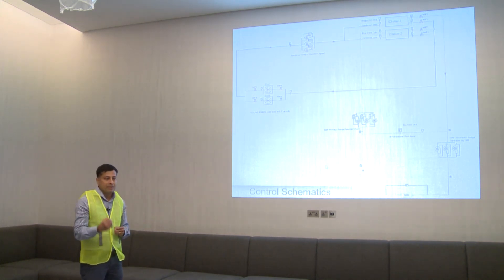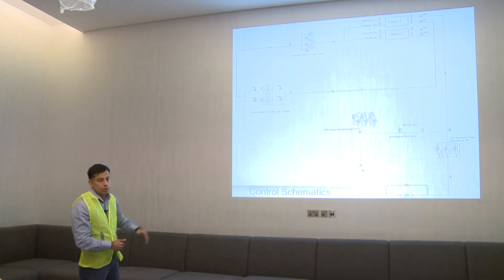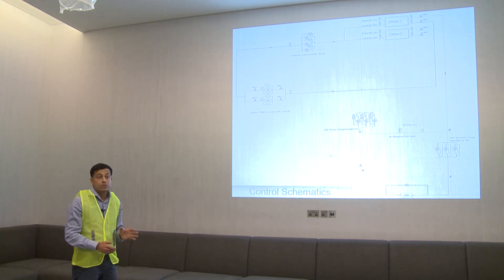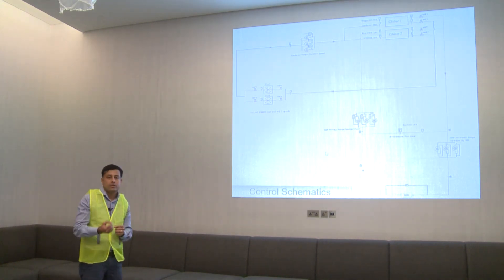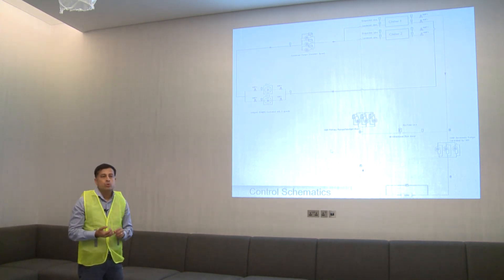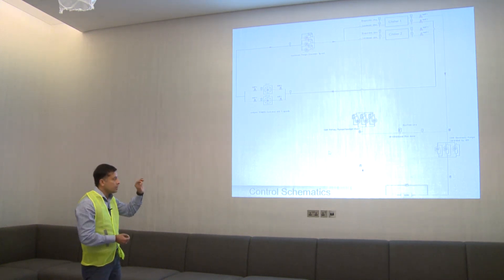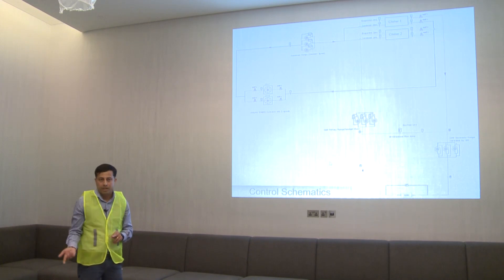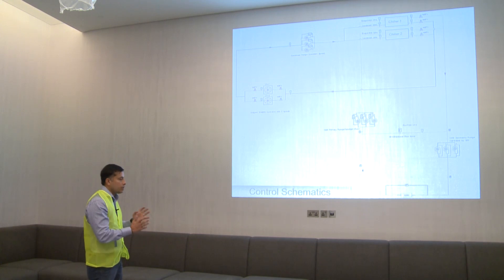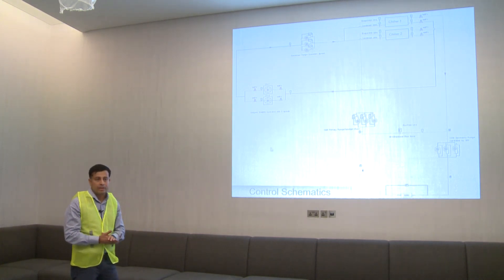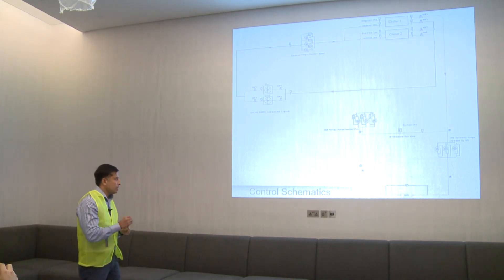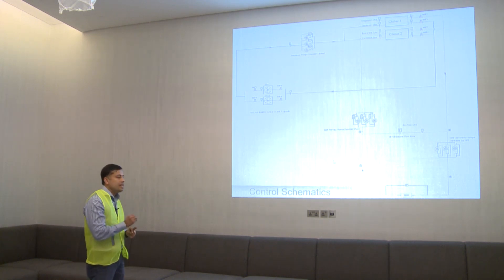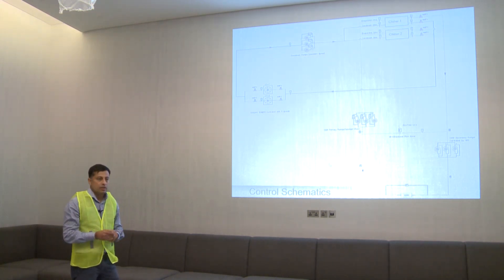All your equipment like AHUs and FCUs are selected based on 5.5°C supply temperature. If you deviate from this set point, the efficiency of the system will reduce. It does not mean that if you increase your temperature, you are reducing energy consumption — that is not correct. If you are using your system effectively, energy reduction will happen automatically. You must keep your supply temperature at 5.5°C, which is the system design temperature. Deviating from that will impact the system and cause issues.